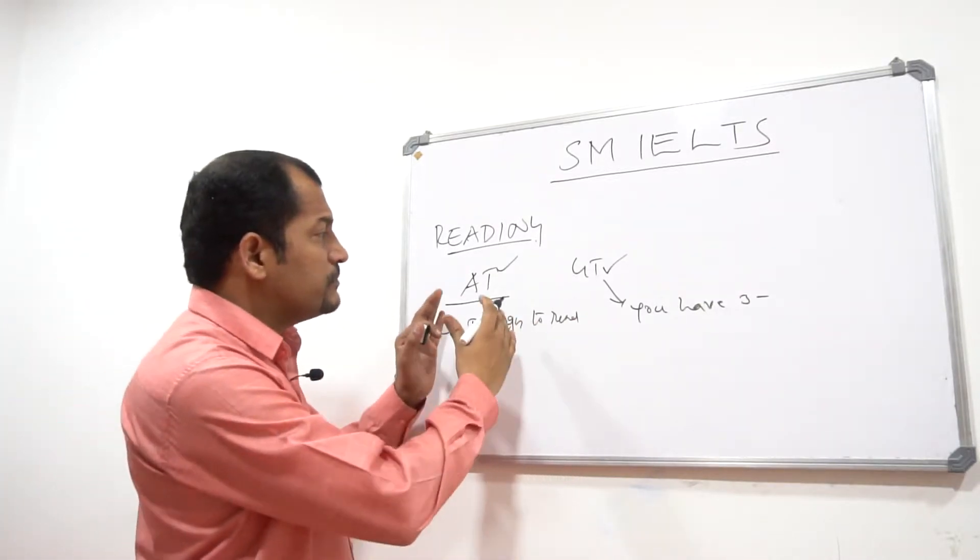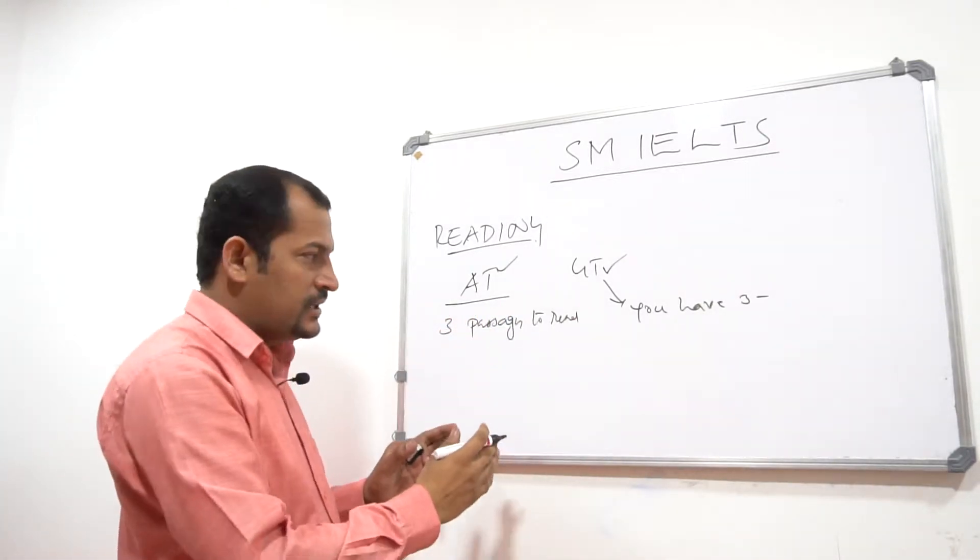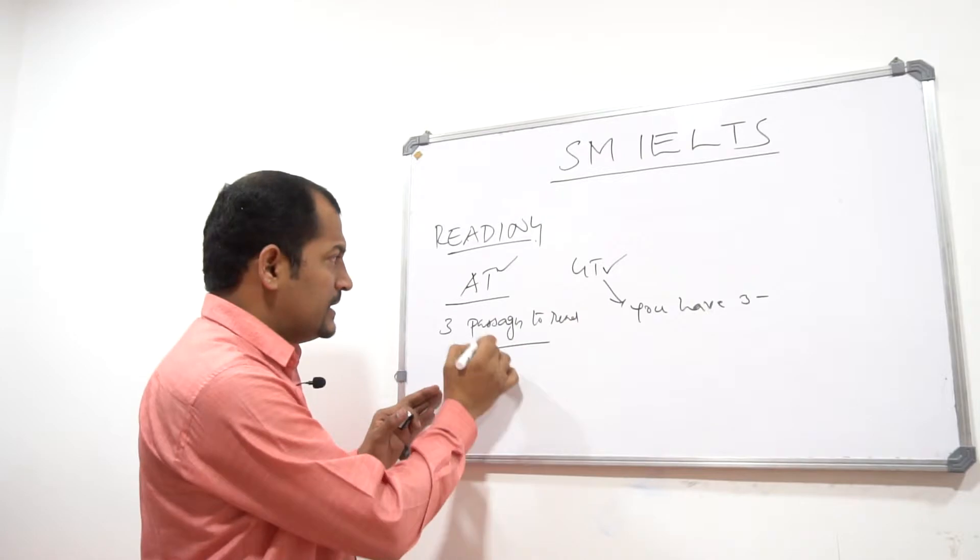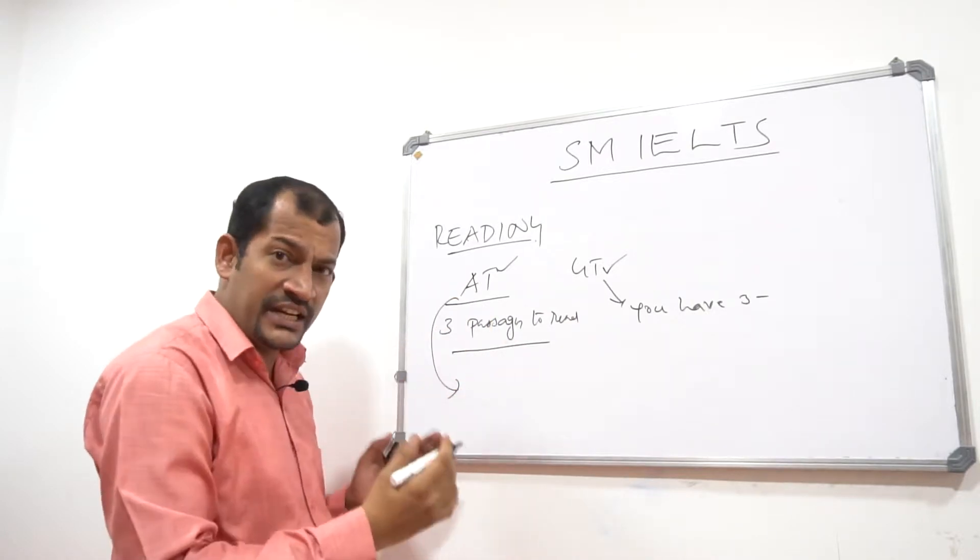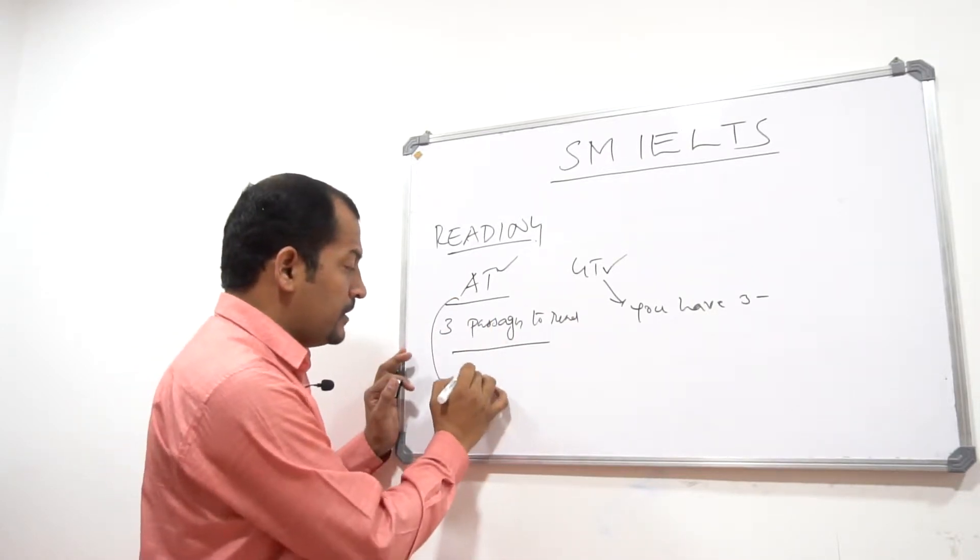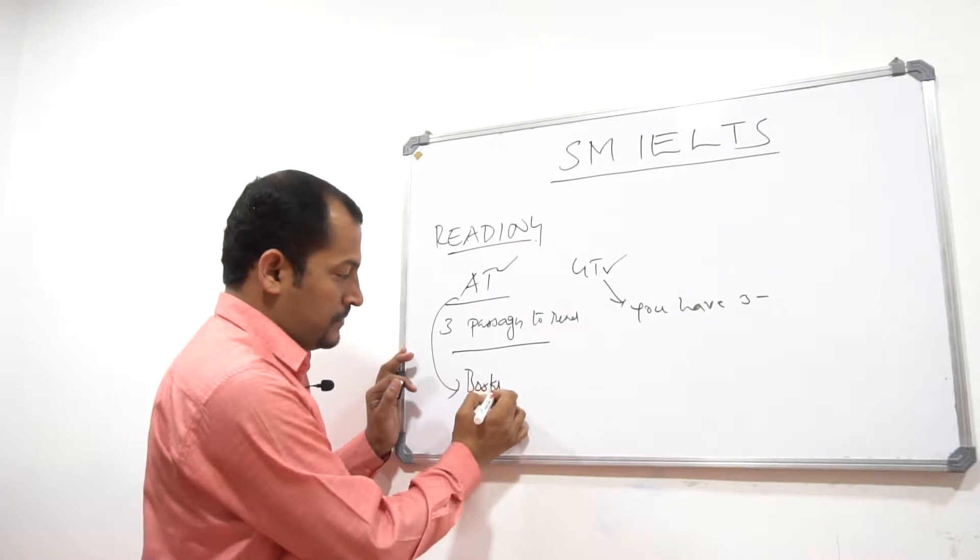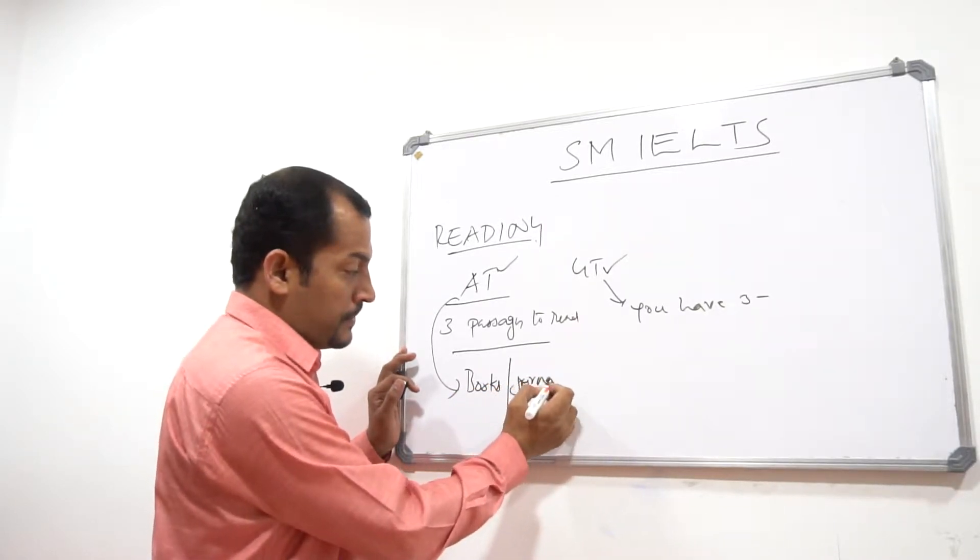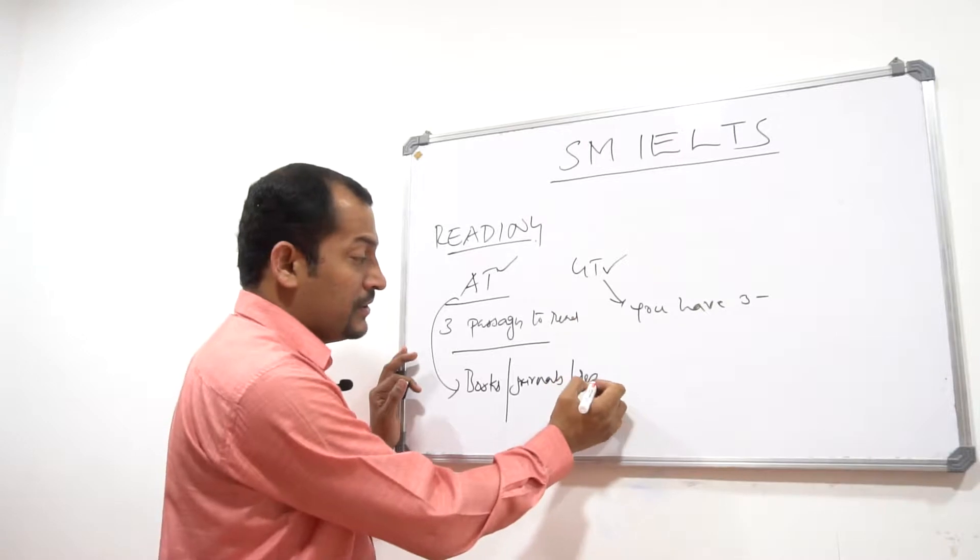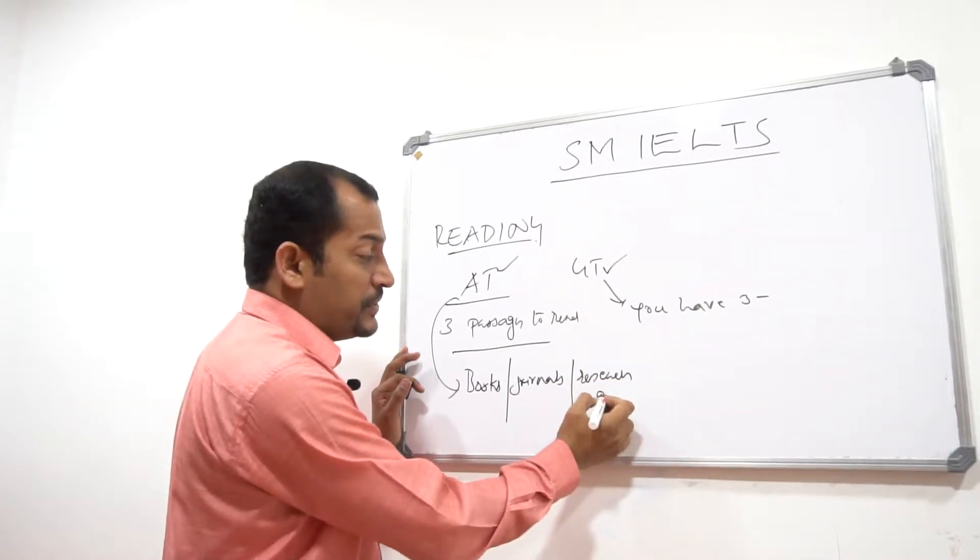There is a small difference between AT and GT. In AT, the materials for reading are taken from books, journals, and research papers.